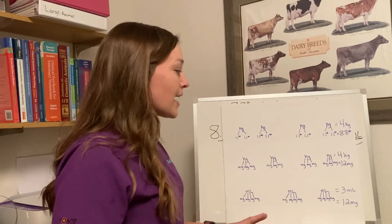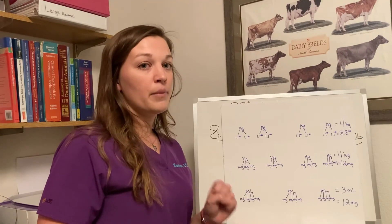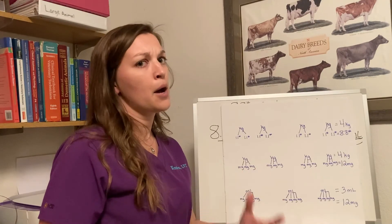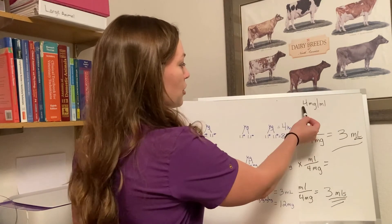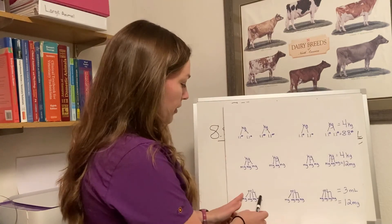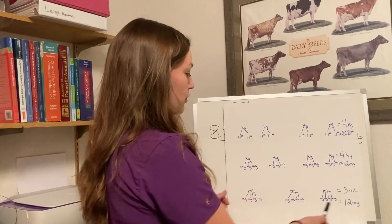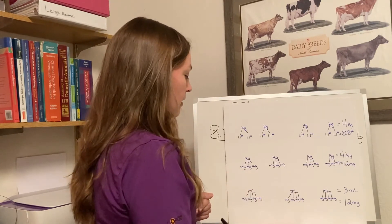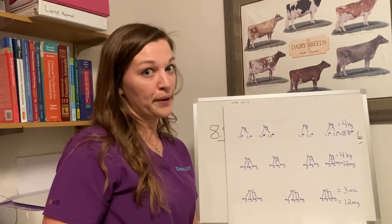The last step was figuring out how many milliliters — knowing that our drug is 4 mg/mL to figure out how many mils to give this patient. So I have little groupings of 4 milligrams. With 12 total milligrams, when I group my fours into milliliter units, that gives us 3 milliliters of drug.